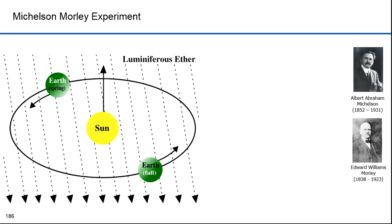Waves typically need something to propagate in — ocean waves propagate in water, sound waves in air. In Maxwell's day, the thought was that there was a luminiferous ether that electromagnetic waves propagated in. Two experimenters, Michelson and Morley, sought to measure the effects of the ether. The Earth spins and orbits the Sun, which is enough motion to cause changes in the direction of flow of the ether. If the theory held, it should be possible to observe a standing light wave.